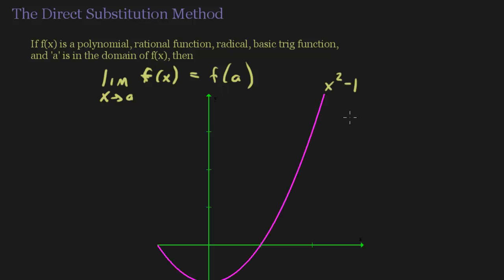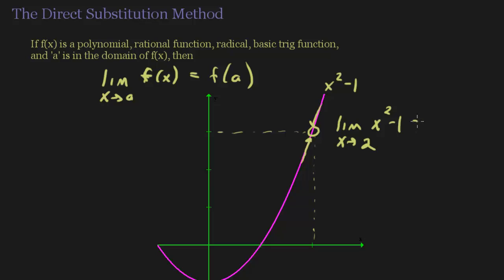We've already seen that happen in the last few videos. So in this example, what's the limit of the function x squared minus 1 as x approaches 2? Well, we would look at it and say, coming in from the left and the right, we're approaching whatever this y value is. And we find out that y value is 3. Another way we could have done this is just say x approaches 2 — 2 is definitely in the domain of x squared minus 1, there's nothing wrong with plugging in 2. So if we plug in 2, we get 2 squared, that's 4 minus 1, that's 3. We could have gotten the limit from just plugging it in.